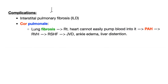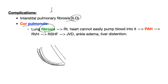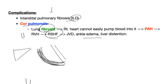EBUS — endobronchial ultrasound — allows sampling of the lymph node under ultrasound guidance. Complications include interstitial pulmonary fibrosis and cor pulmonale. Lung fibrosis makes it hard for the right heart to pump blood against the fibrosed lung, leading to right ventricular hypertrophy, and eventually right-sided heart failure with jugular venous distension, ankle edema, and liver distension. That edema is a transudate.